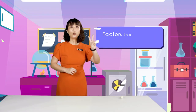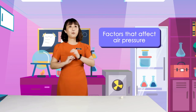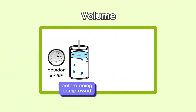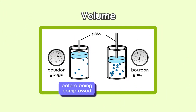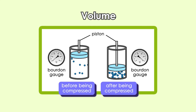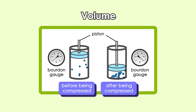There are two factors that affect air pressure. The first factor is volume. When a closed container is compressed, the volume in the container is reduced. This causes the air particles to collide more frequently with the walls of the container, and so the air pressure in the container increases.